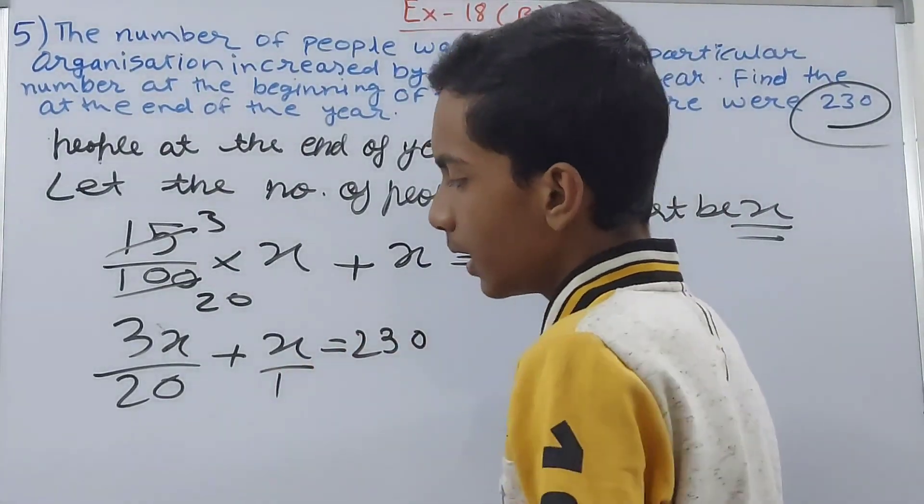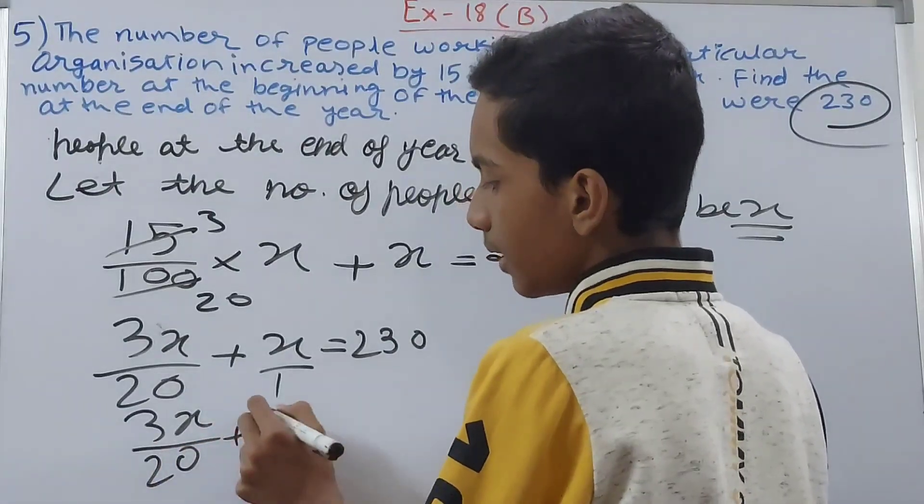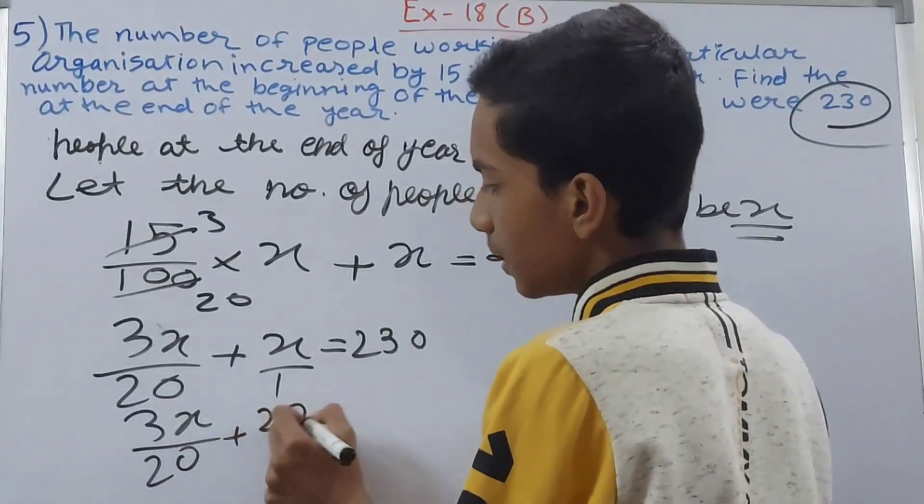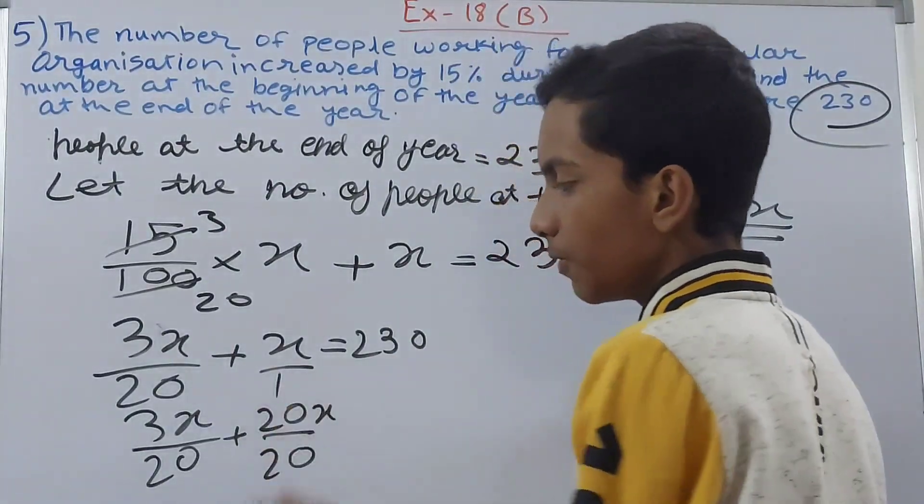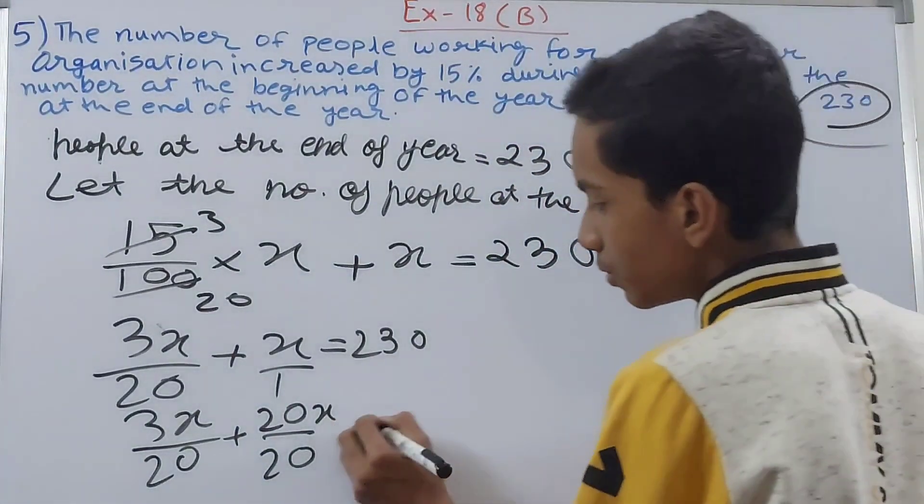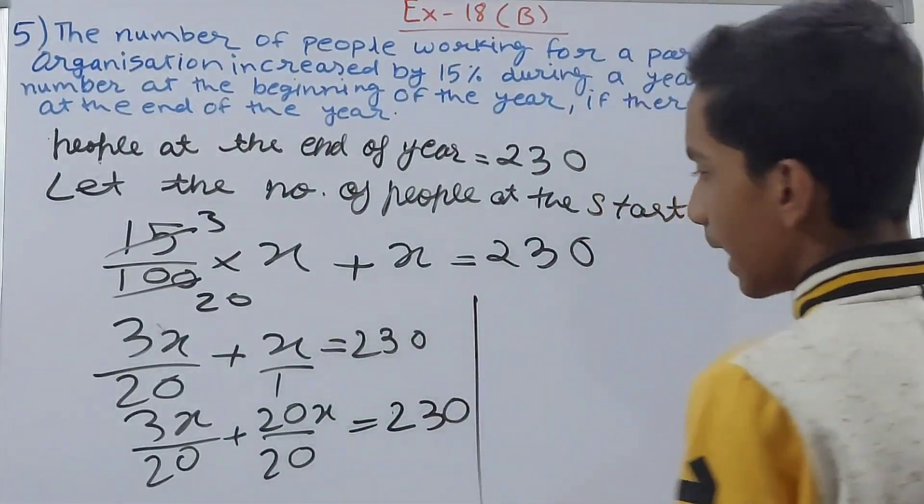So this becomes 3x upon 20 plus 20x upon 20 because we will find the LCM, and this equals to 230. So now we will solve that and what do we get here: 23x upon 20 equals to 230.